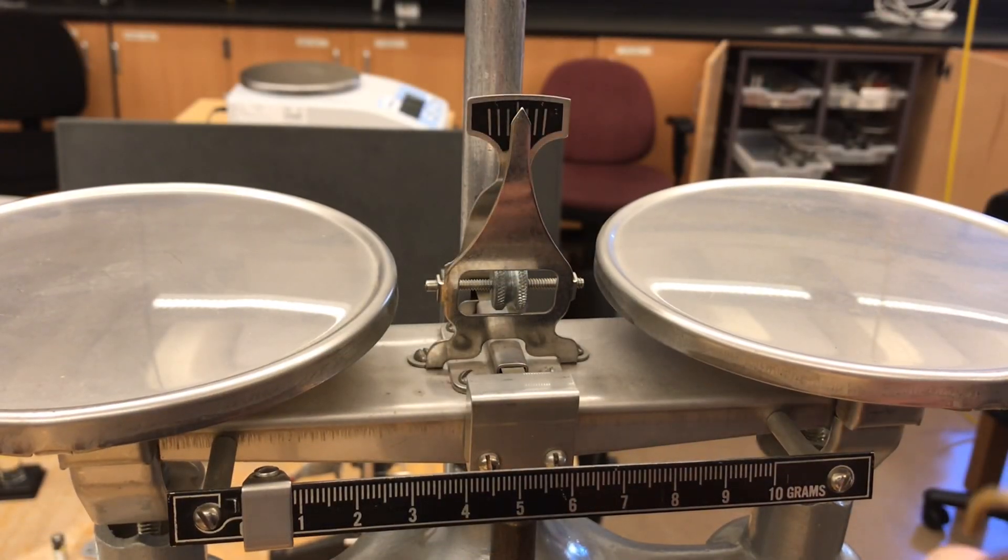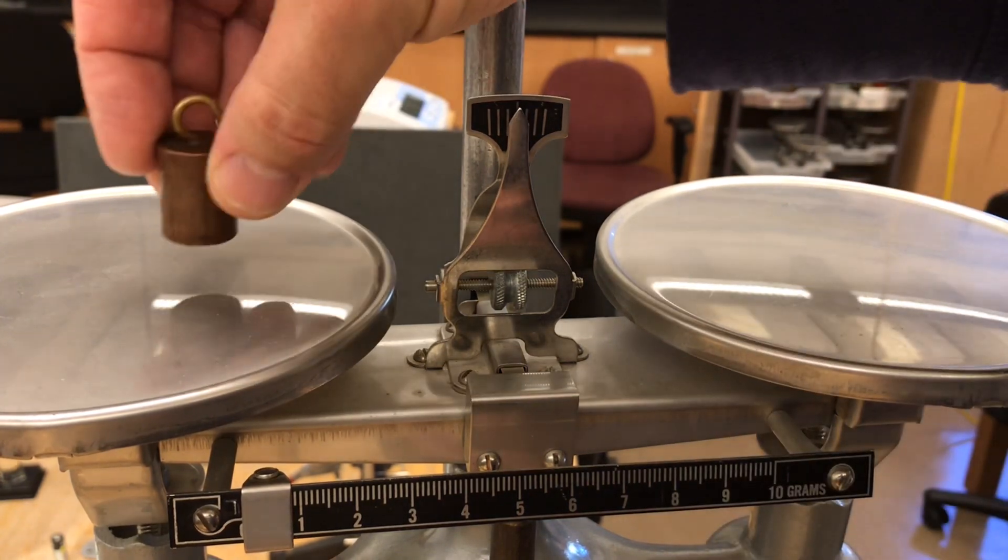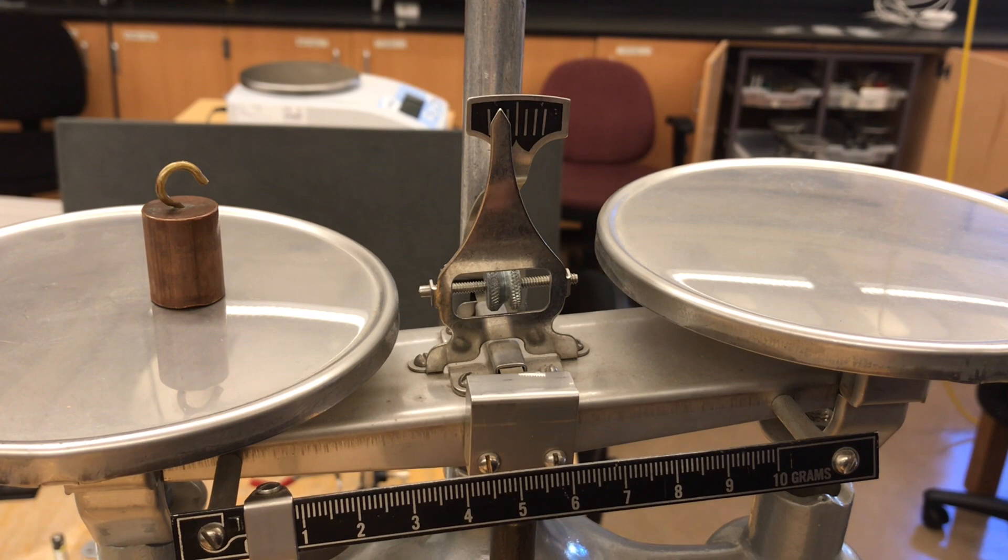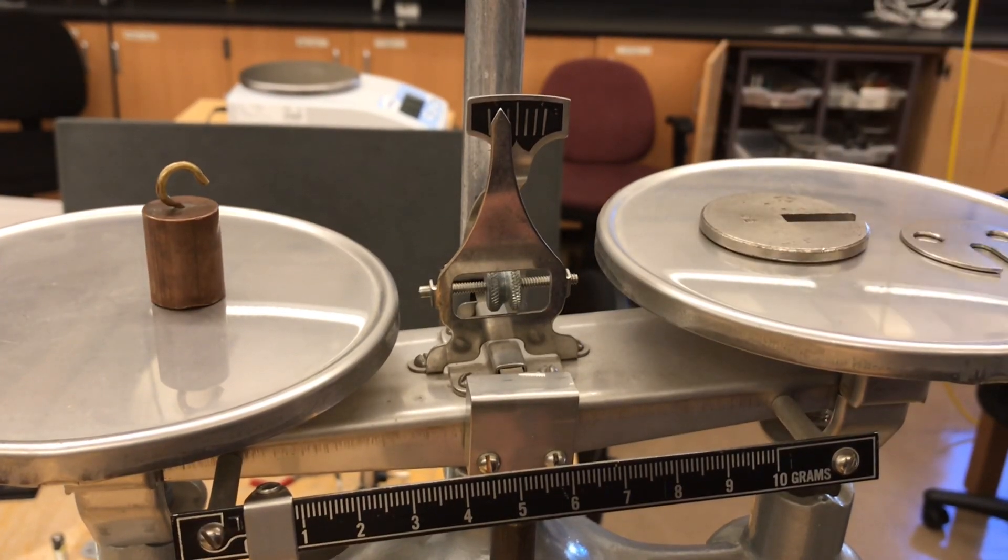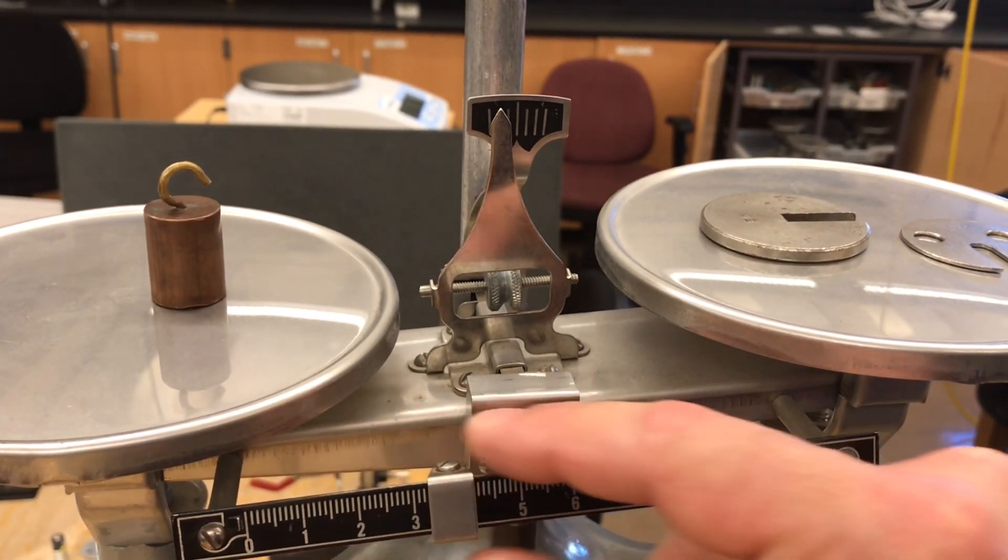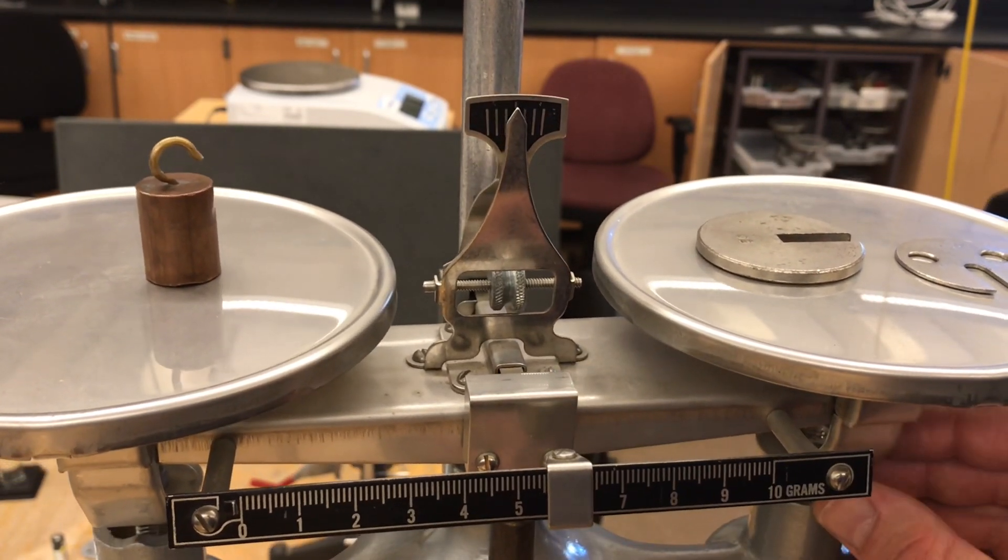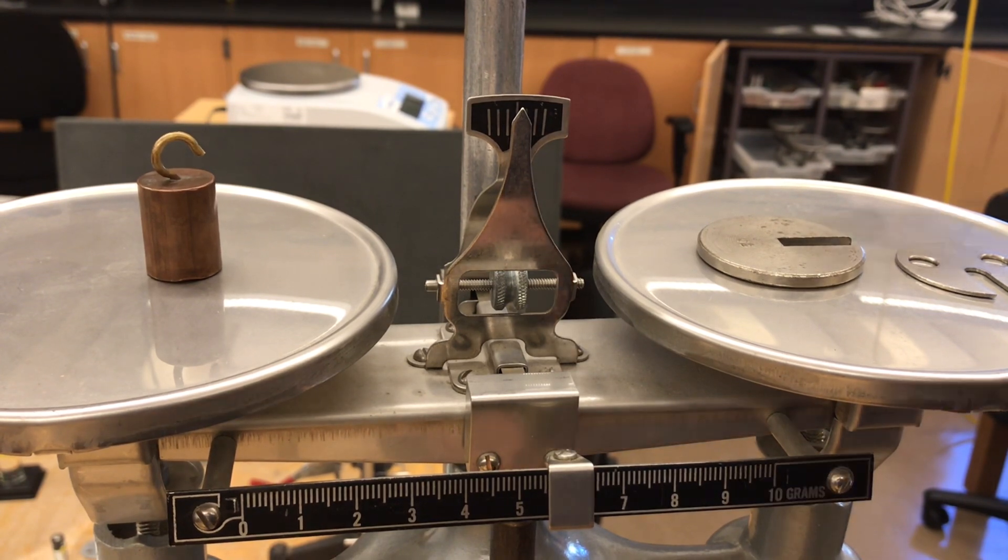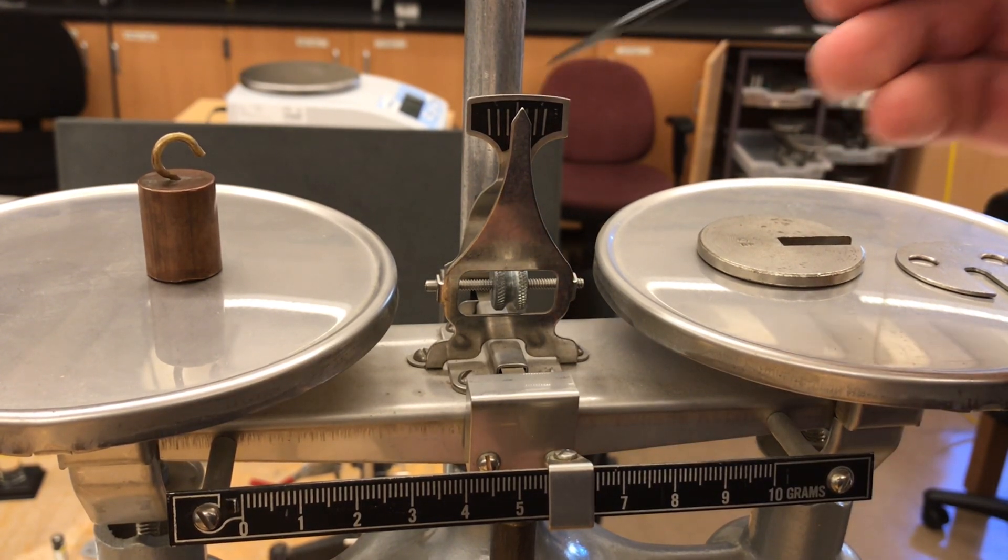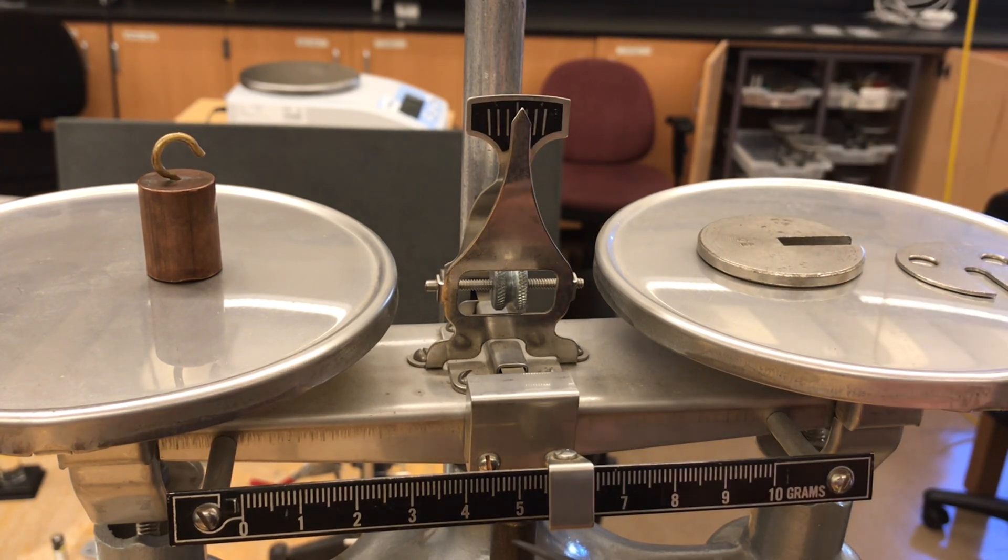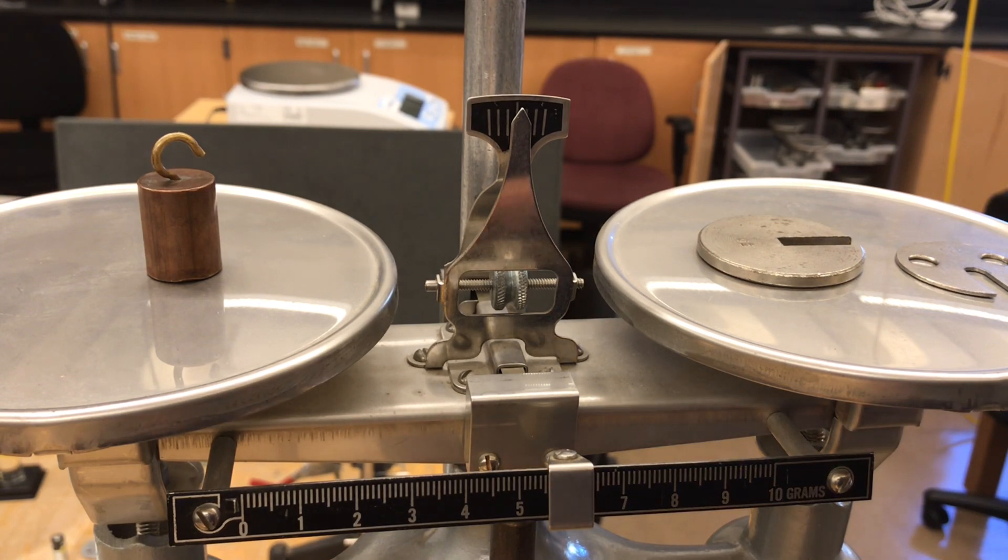Now if I want to weigh this copper cylinder in air, I can just put it on one side of the pan and add some weight to the other side. I get a balance pretty close to here. This looks like it's right in the middle. That would be 60 in the pan plus 5.5 on the slider, so a total of 65.5 grams for this cylinder.